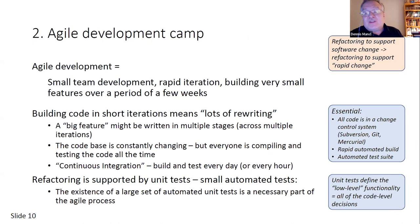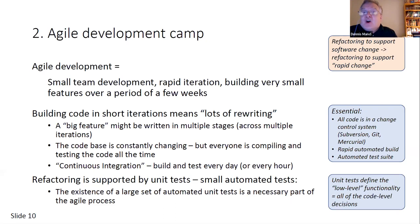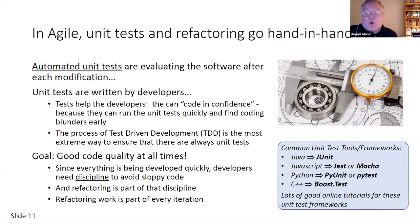Unit testing helps support safer refactoring. Agile teams are in the habit of using a version control system or change control system for all of their code to build automated build and automated testing. You might use Subversion, Mercurial, or Git — all your code is being checked in so you can always go back to a previous version, make a branch to try something out, and then merge it back in. This change control is a big help in the step-by-step refactoring process.